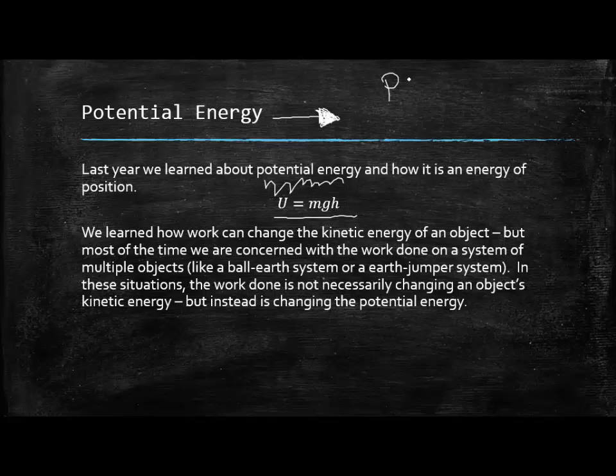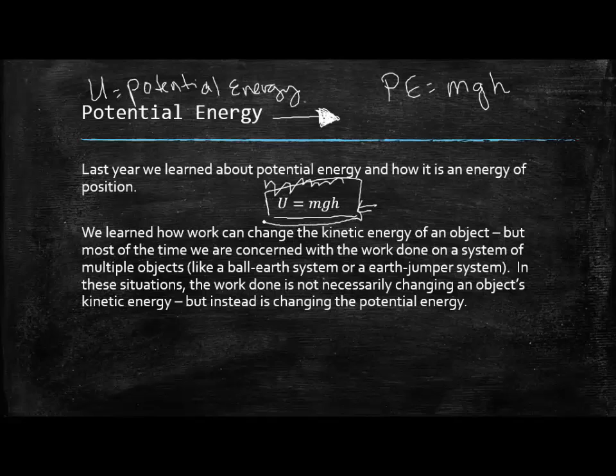Last year, we talked about potential energy as being an energy of position. I know last year we talked about PE equaling mgh, but on the AP test and in subsequent physics classes when you get to college, we use the letter U to denote potential energy, and we use the letter K to talk about kinetic. Last year we learned that the potential energy is equal to the mass times the gravity times the height. Another way to think of this is this is a way for us to talk about the potential that gravity has to do work on us. This is what we call gravitational potential energy.